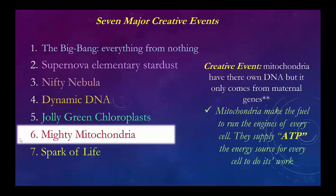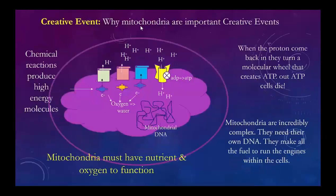For the seven major creative events, we're moving to number six: the mighty mitochondria. All of these are major creative events. The mitochondria have their own DNA — mitochondrial DNA — which comes from maternal genes, since at this point you already have sexual reproduction. What do the mitochondria do? They make the fuel to run the engines of every cell. They supply ATP — adenosine triphosphate — which has the energy to run every system. Without ATP, you're in deep trouble within 2 minutes. ATP is the energy source for every cell to do its work. Mitochondria are truly a miracle.